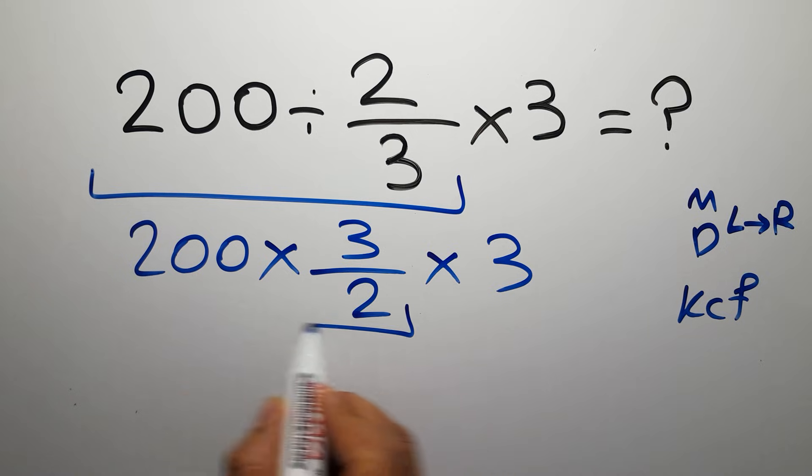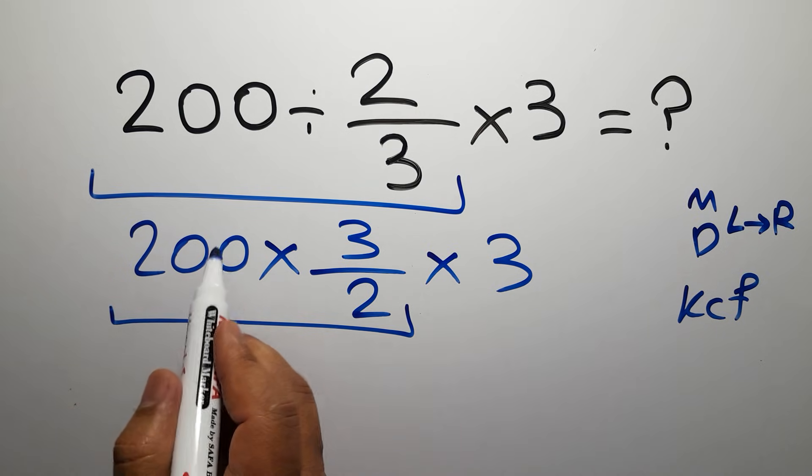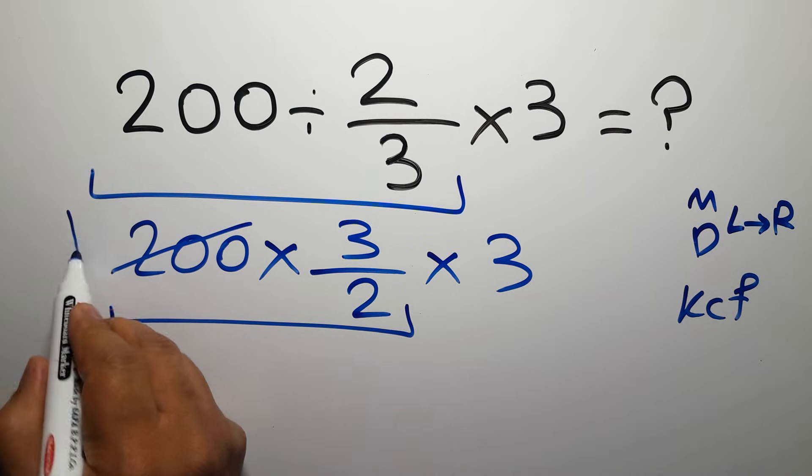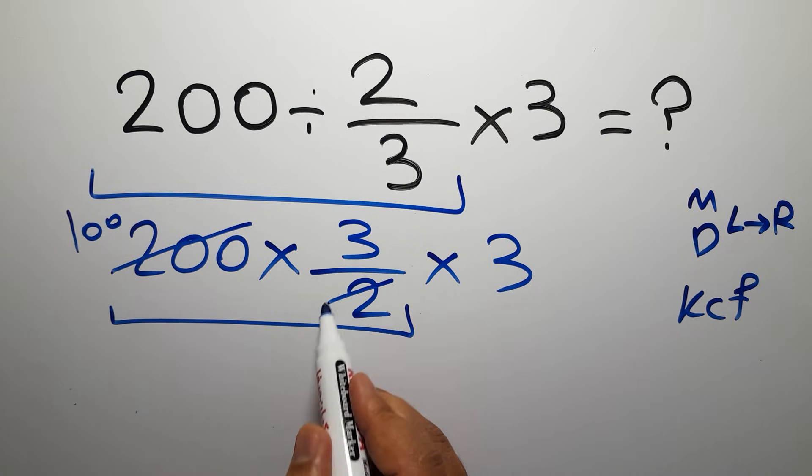200 times 3 over 2. Here 200 divided by 2 gives us 100, and here 2 divided by 2 gives us 1, so 100 times just 3.